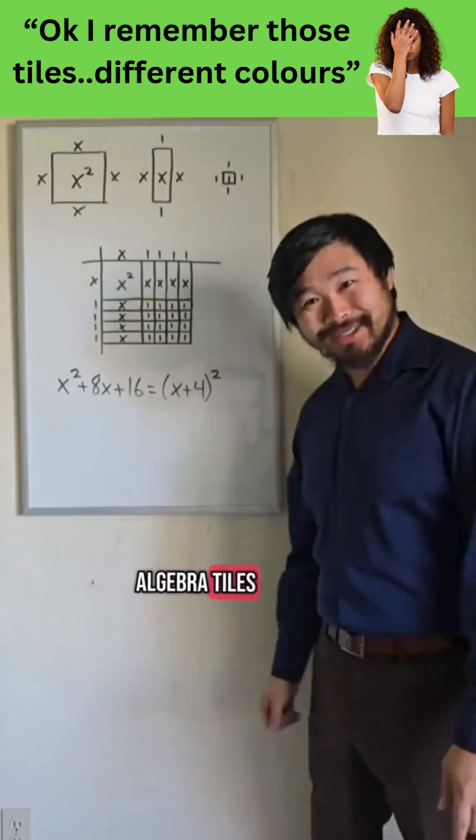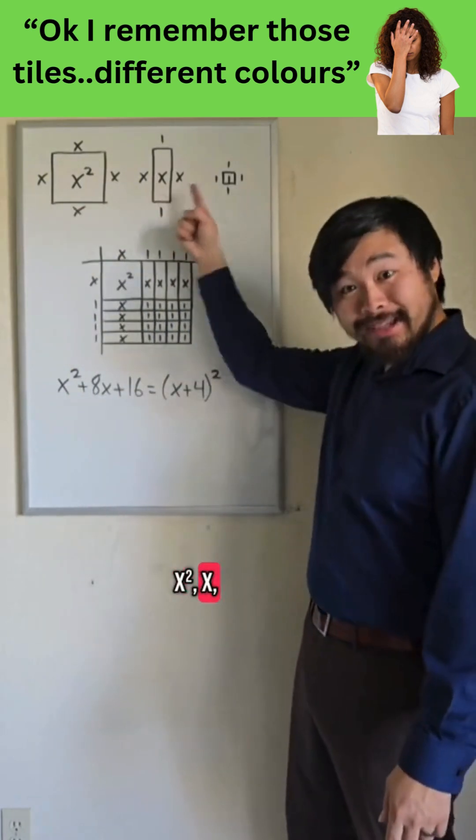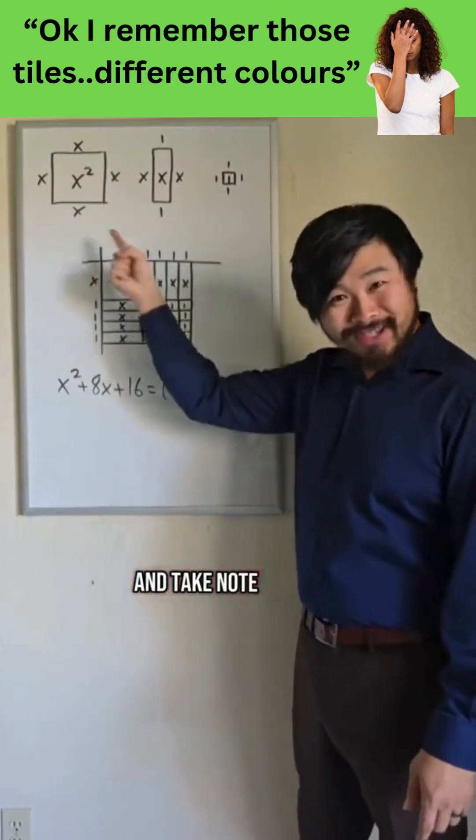First, let's take a look at some algebra tiles. We have our x squared, x, and 1 tiles, and take note of their side lengths.